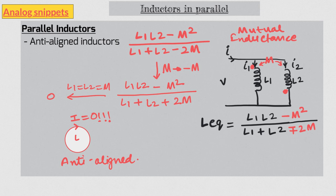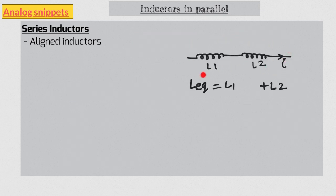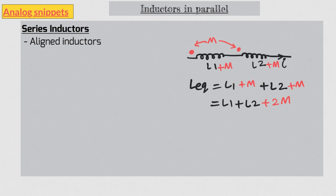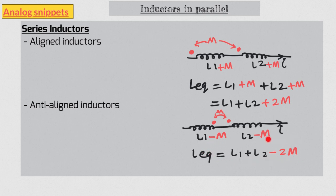This magnetic cancellation behavior has many practical applications. If you have a current loop with high inductance, split it into two and place them side by side in anti-aligned fashion so their magnetic fields cancel. Now let's quickly consider inductors in series. Two uncoupled inductors in series simply add. With mutual inductance, we modify the values of individual inductors by adding M, and we can simplify by combining the two M terms. This equation also explains why doubling a wire's length causes its inductance to more than double — because the wire segments have mutual inductance between each other.